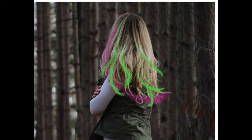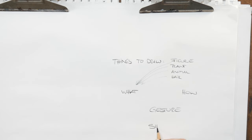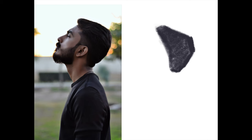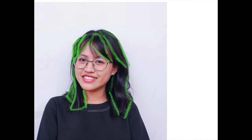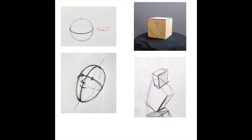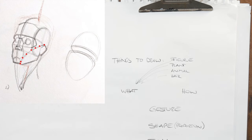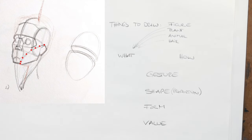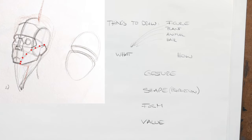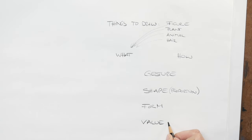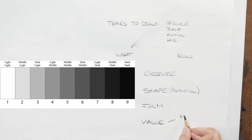Begin with gesture, then shift towards thinking about shape. Shape can be the overall silhouette, or it can be the smaller sub-shapes within the silhouette. Once you've considered those two things, you want to think about form — where are the major plane changes, from the top to the side, from the front to the side. That can be described simply with cross-contour lines and plane changes.